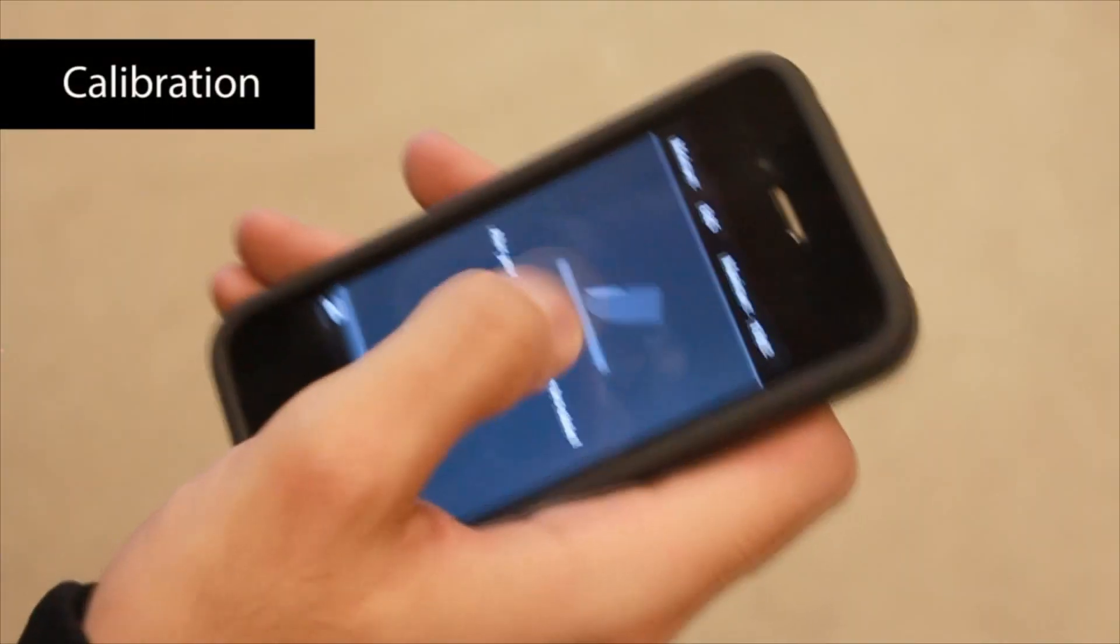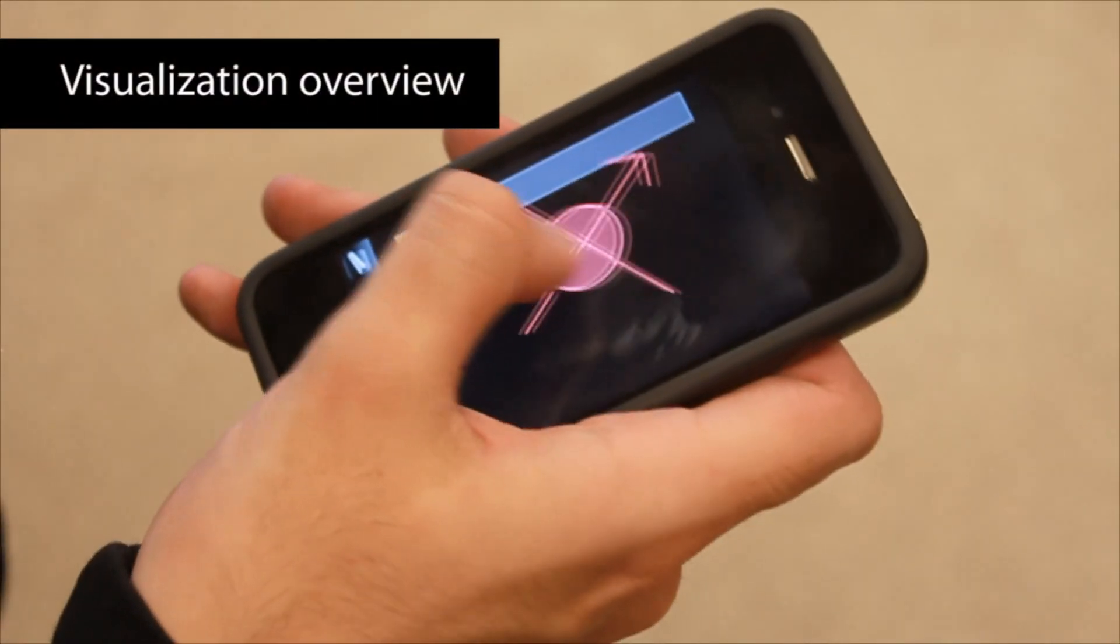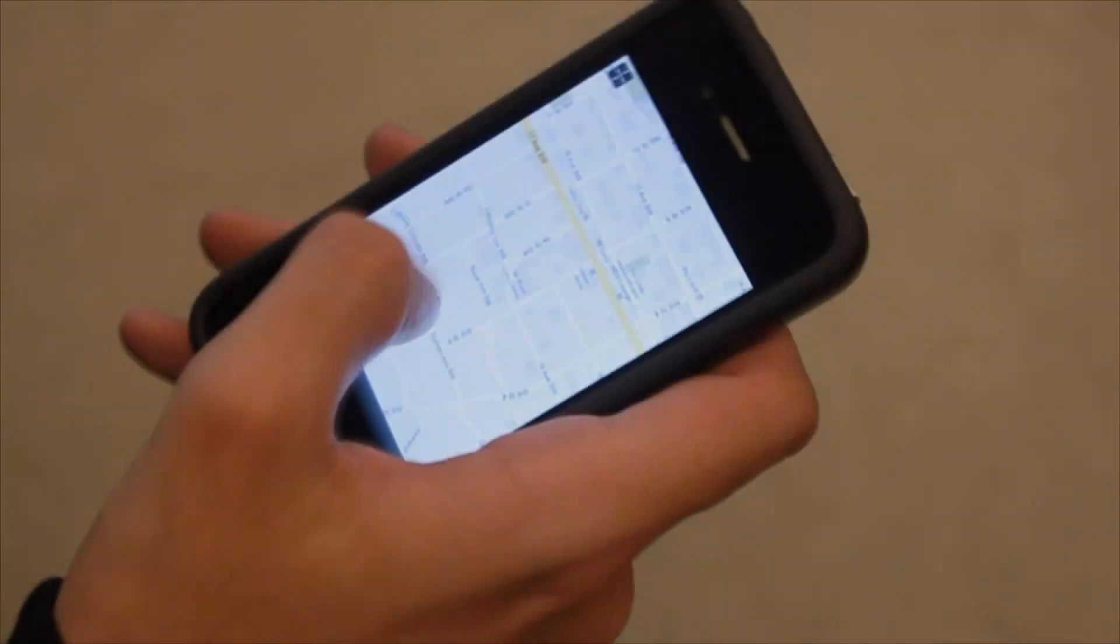At first launch, users perform a one-time calibration to measure the smallest and largest contact size. They can verify their calibration with a visualization overview. Once satisfied, users can begin using the device and navigating on a geographical map.